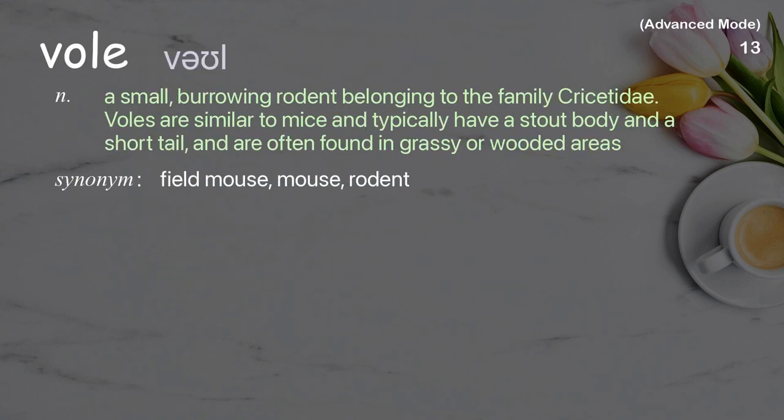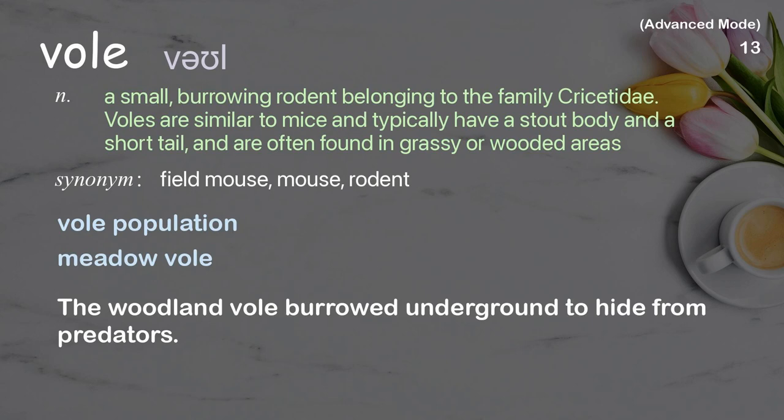Vole: a small, burrowing rodent belonging to the family Chrysettidae. Voles are similar to mice and typically have a stout body and a short tail, often found in grassy or wooded areas. Examples: vole population, meadow vole. The woodland vole burrowed underground to hide from predators.